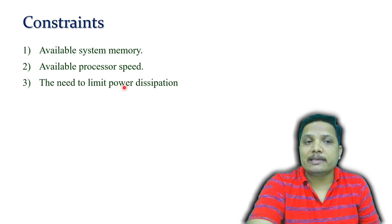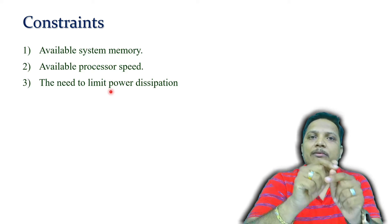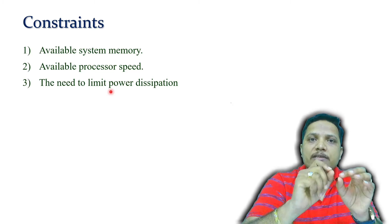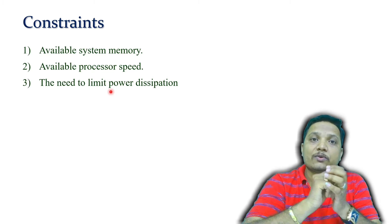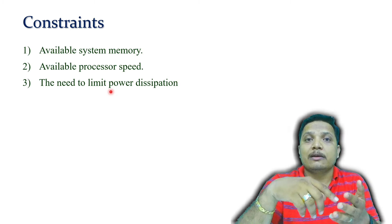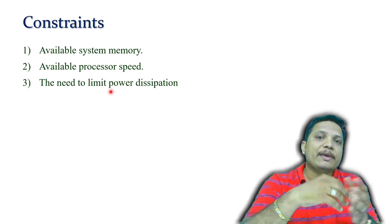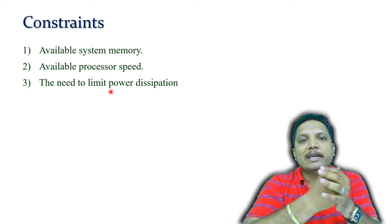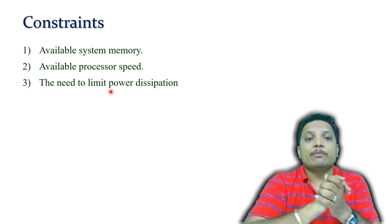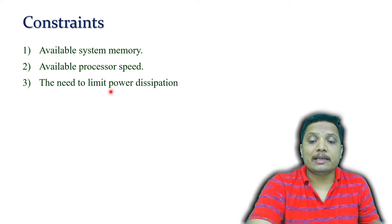The third constraint is power dissipation. When we design an embedded system, we use a battery that has a fixed amount of charge. If power dissipation is higher, the system drains power faster and you cannot use it for a longer duration. For example, if your mobile phone gets discharged within half an hour, you cannot use it for an entire day. So power dissipation is also a very essential constraint.